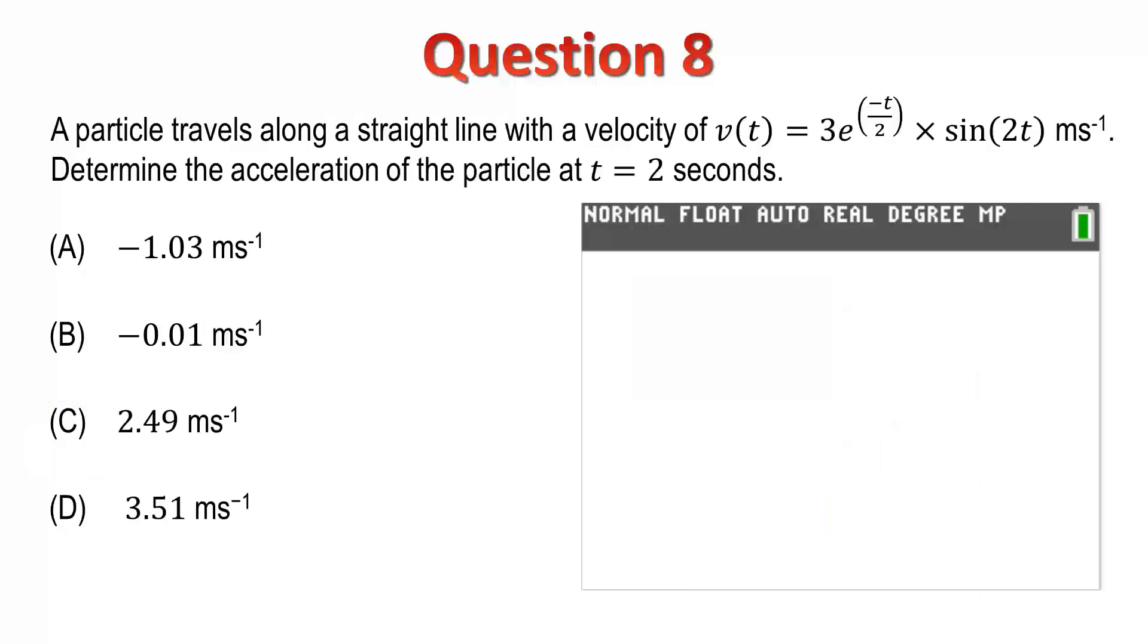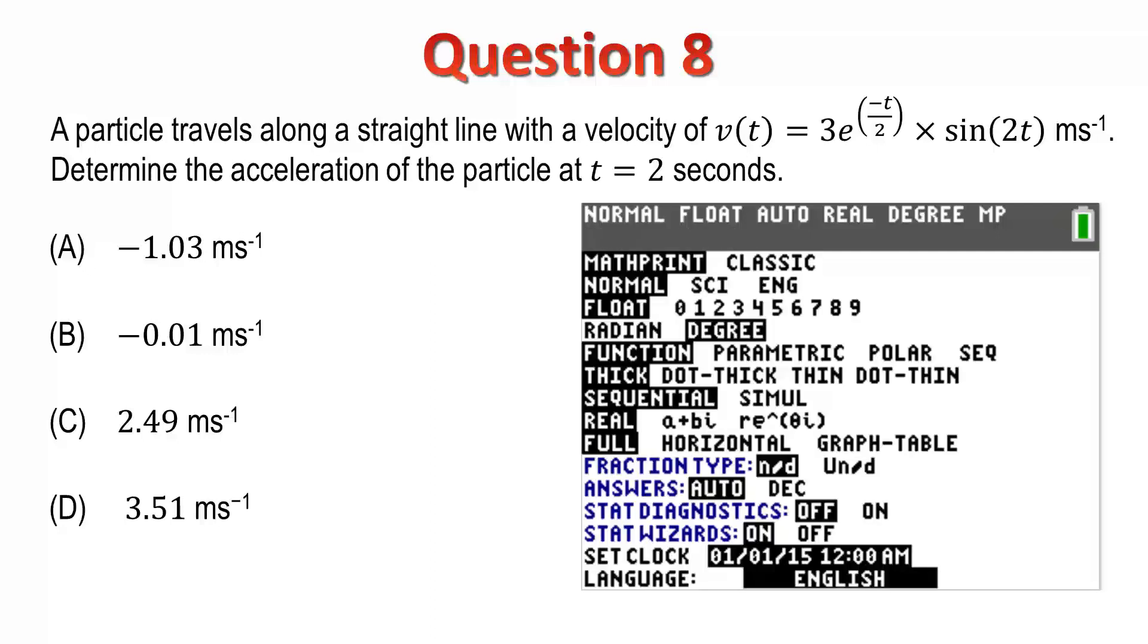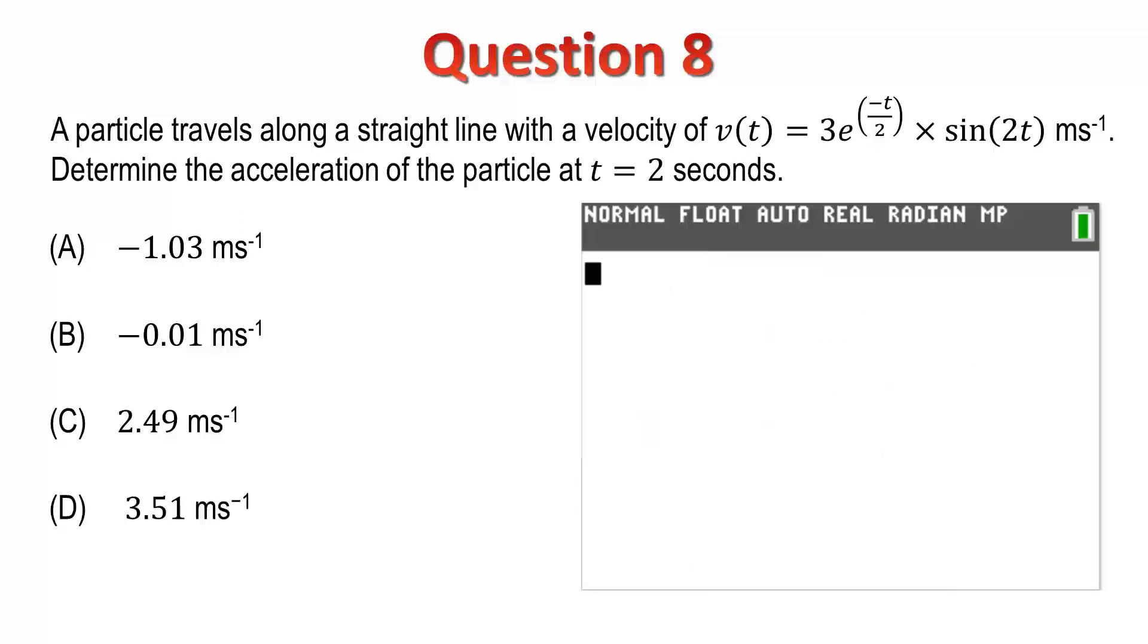Question 8. A particle travels along a straight line with a velocity given by v. We are required to determine the acceleration of the particle when t equals 2. Acceleration is given by dv dt, so we need to find the derivative of v with respect to t. In a previous question, we set our calculator to degrees, and as we are working with calculus and trigonometry, we need to change back to radians.